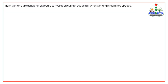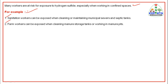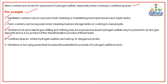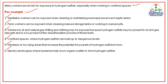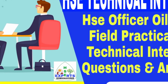Many workers are at risk for exposure to hydrogen sulphide, especially when working in confined spaces. Sanitation workers can be exposed when cleaning or maintaining municipal sewers and septic tanks. Farm workers can be exposed when cleaning manure storage tanks or working in manure pits. Workers in oil and gas, natural gas, drilling and refining may be exposed because hydrogen sulphide may be present in oil and gas deposits and is a byproduct of the desulphurization process of these fuels. Confined spaces where H2S can build up to dangerous levels, wind-lays, low-lying areas that increase the potential for pockets of H2S to form, and marshy landscapes where bacteria break down organic matter are all risk environments. Hot weather speeds up rotting of manure and other organic material and increases hydrogen sulphide vapour pressure.